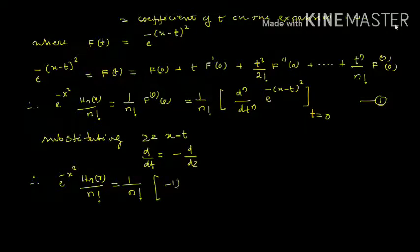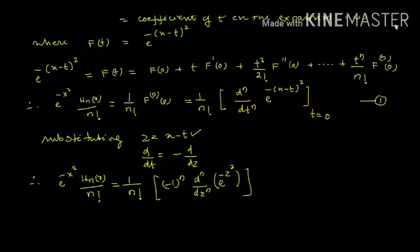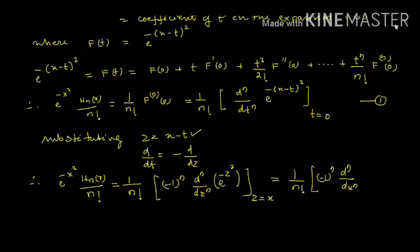Using d/dt = -d/dz in equation 1, we get (-1)^n times d^n/dz^n of e^(-z²). At t=0, z = x-t becomes z = x. So this equals 1/n! times (-1)^n times d^n/dx^n of e^(-x²), since z = x.